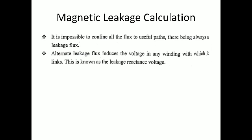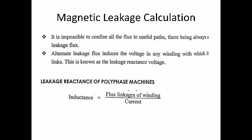The leakage reactance of a polyphase machine is determined by two things. First, inductance is defined as flux linkage of the winding divided by current: L = T·φ / I. Second, reactance is defined as X = 2πfL. With these two relations, we are now going to deal with magnetic leakages.